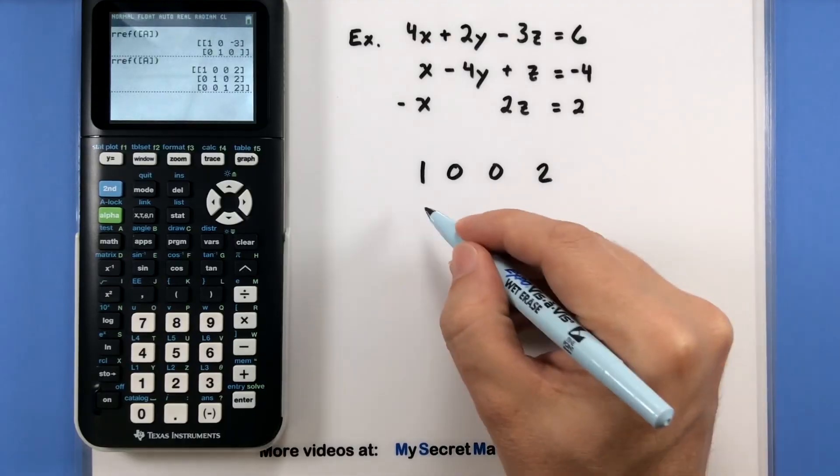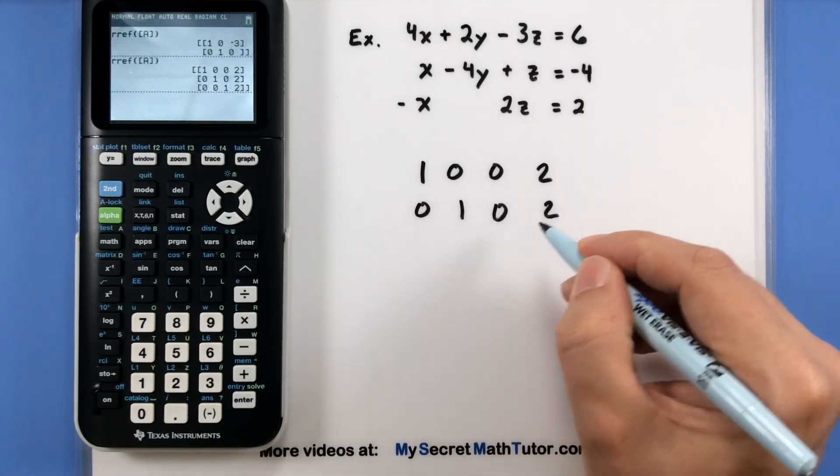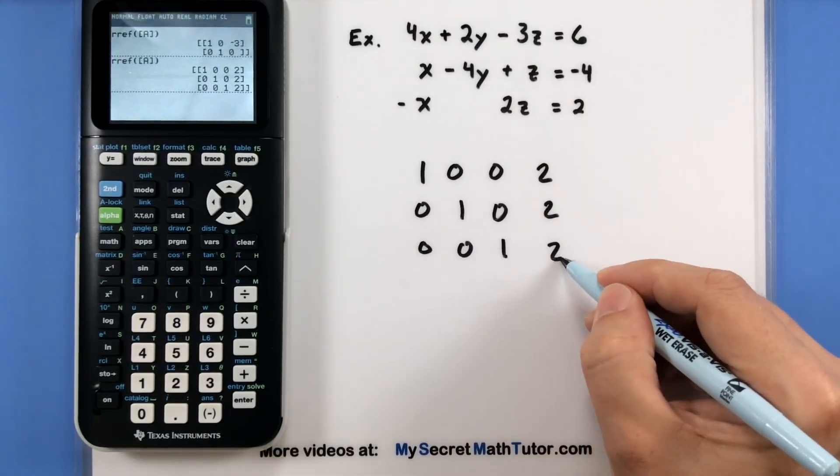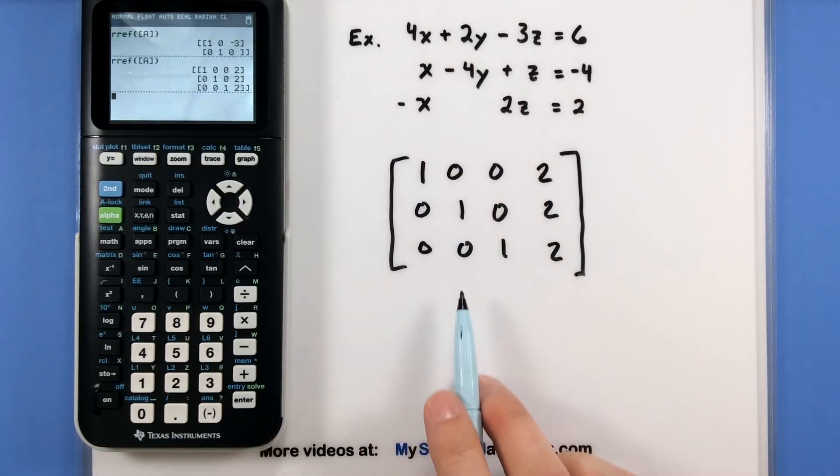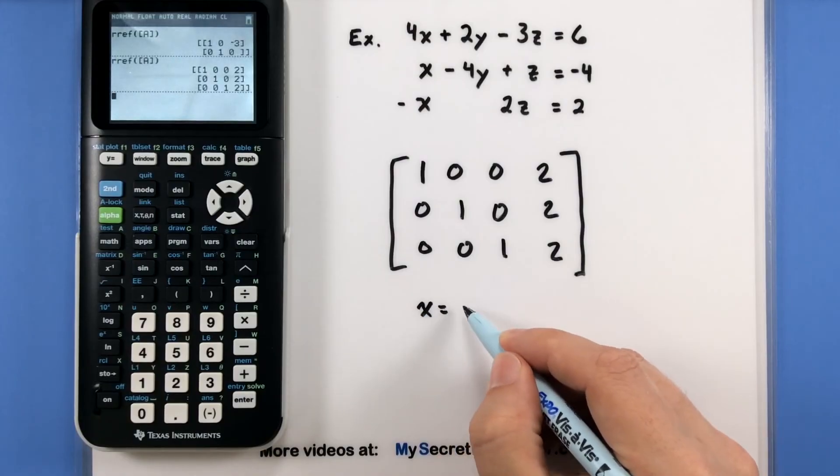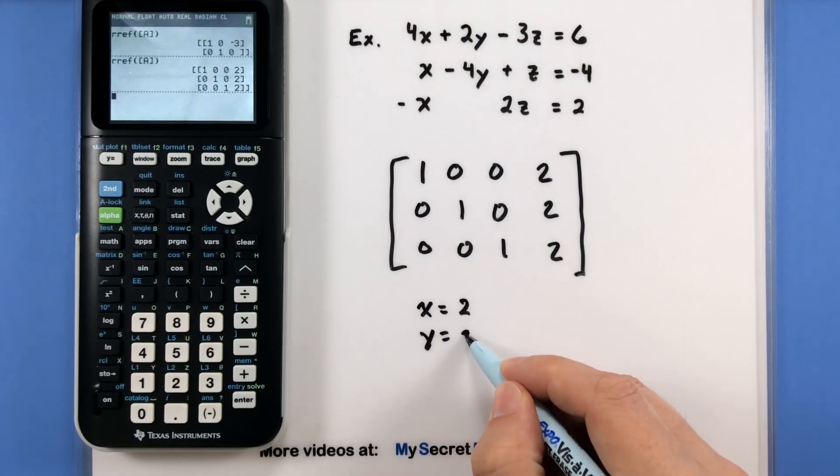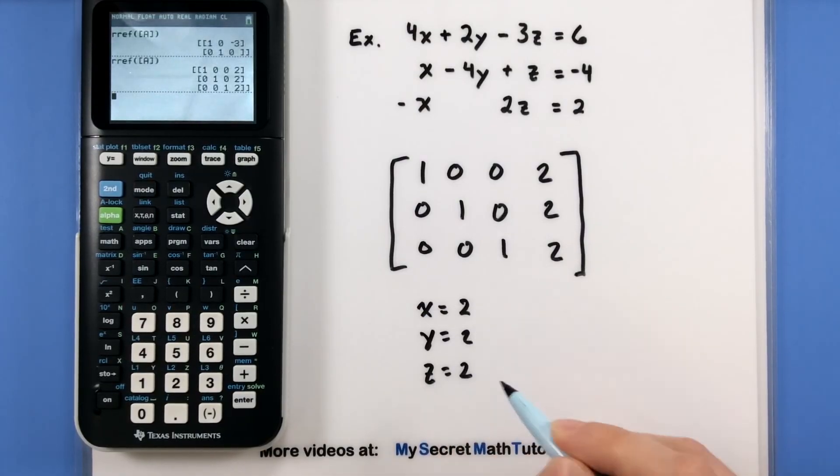So 1, 0, 0, 2, 0, 1, 0, 2, 0, 0, 1, 2. So there's our matrix. And now we just have to interpret what this means. So we have x, y, and z. Looks like all of them are equal to 2. And there's our solution.